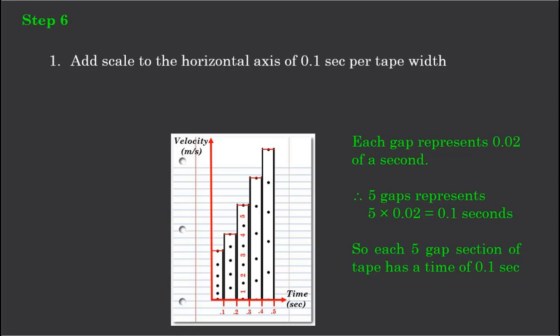So at the end of 5 gaps, when you multiply that by 0.02 of a second per gap, each strip of paper represents 0.1 of a second.